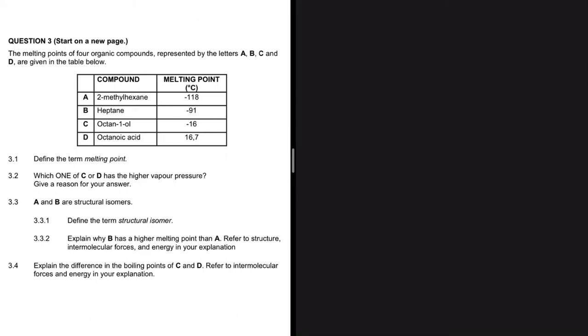If a compound has a higher vapor pressure, what does that say about the boiling point? What does that say about the melting point? Before we do that, let's do 3.1, which says let's define the term melting point. Melting point is the temperature at which the solid and liquid phase are at equilibrium.